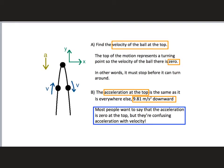Let's look at part A and part B. We want to find the velocity of the ball at the top. The velocity of the ball at the top has to be zero, because the ball is going up, it stops for a moment, and then it comes back down. The peak of the path represents a turning point in the ball's motion. It has to stop before it can turn around. So at that moment when it stops, its velocity is going to be zero.